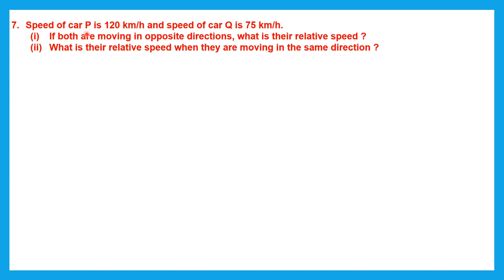Question 7. Speed of car P is 120 kilometers per hour and speed of car Q is 75 kilometers per hour. We have two cars P and Q with speeds given. Now listen carefully — if both are moving in opposite directions, what is their relative speed? When there are two moving bodies, the speed of one body compared to the other is called relative speed.